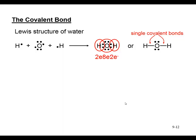Let's look at the Lewis structure for water. Hydrogen has a single 1s¹ electron configuration. Oxygen has a helium core we ignore, plus a 2s² and 2p⁴ valence configuration, giving six valence electrons. In oxygen's Lewis structure, two orbitals are completely filled and two are half-filled — it's these half-filled orbitals that will be involved in covalent bonding.